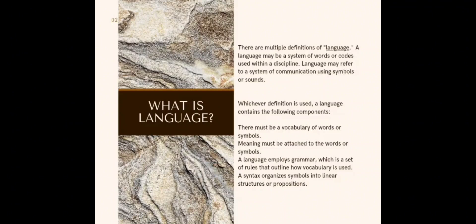Whichever definition is used, a language contains the following components. There must be a vocabulary of words or symbols, meaning must be attached to the words or symbols. A language employs grammar which is a set of rules that outline how the vocabulary is used as syntax organizes symbols in linear instruction or propositions.